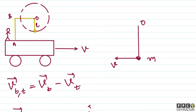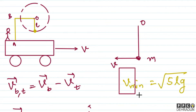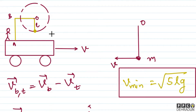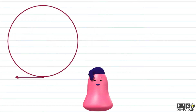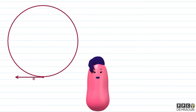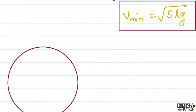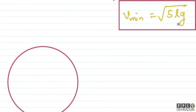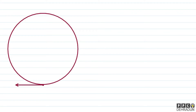The minimum value of V is under the root of 5gL, where L is the length of the thread, which becomes the radius of the vertical circle. So now I will derive this result that V minimum equals √(5rg), where r is the radius.